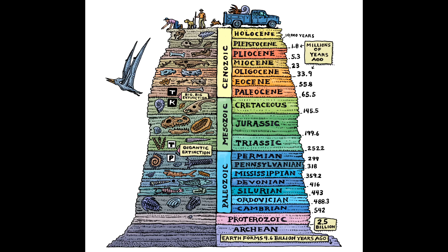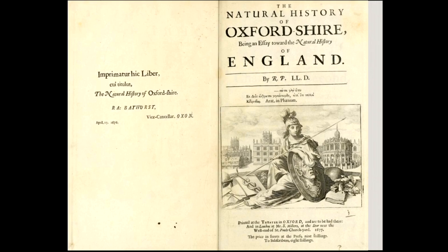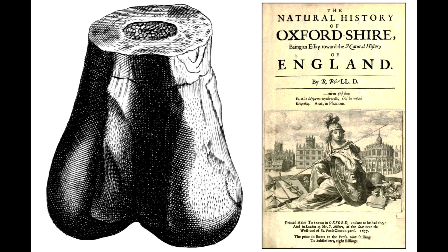Smith never saw any dinosaur bones, like we see here. The first dinosaur bone was discovered by another Englishman, Robert Plott, in 1677, and that was detailed in his book The Natural History of Oxfordshire. Plott had no concept of dinosaurs though, and after ruling out large known animals like the elephant, he decided that it must have been a bone from a giant human being.